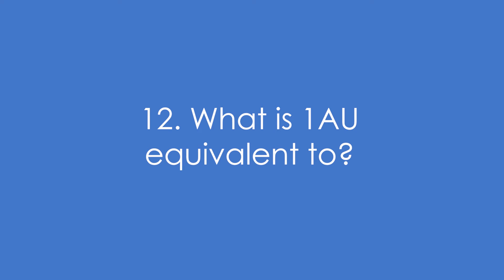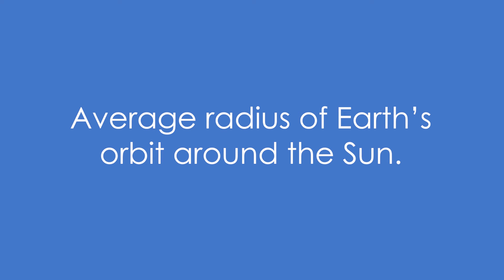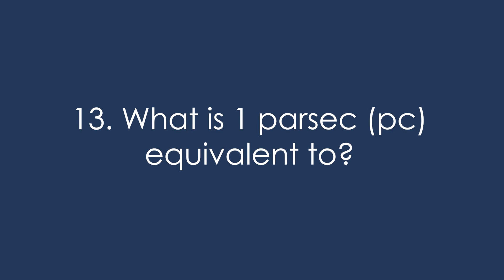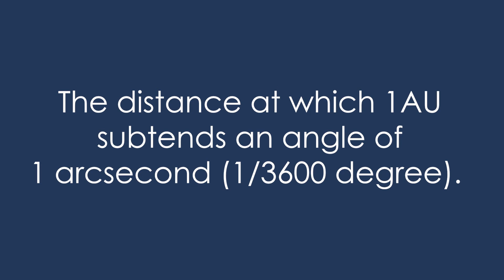Question 12: What is 1 AU, astronomical unit, equivalent to? It's the average radius of the Earth's orbit around the Sun. Question 13: What is 1 parsec equivalent to? It's the distance at which 1 AU subtends an angle of 1 arc second. It's 1/3,600th of a degree. So that's why they're called parsecs because it's short for parallax seconds.